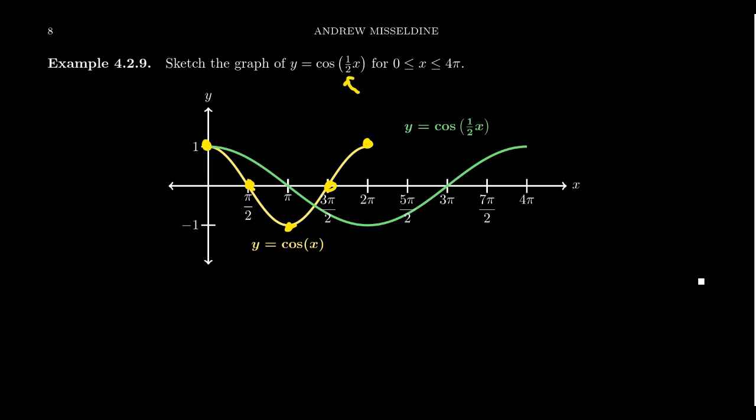Well, because you have this coefficient of 1/2 inside of the function, what this does is it's going to cause a horizontal stretch to occur. Basically, we're slowing down. We're slowing down the function by a factor of 2. So it takes twice as long for it to complete one cycle. And so let's look at these points.